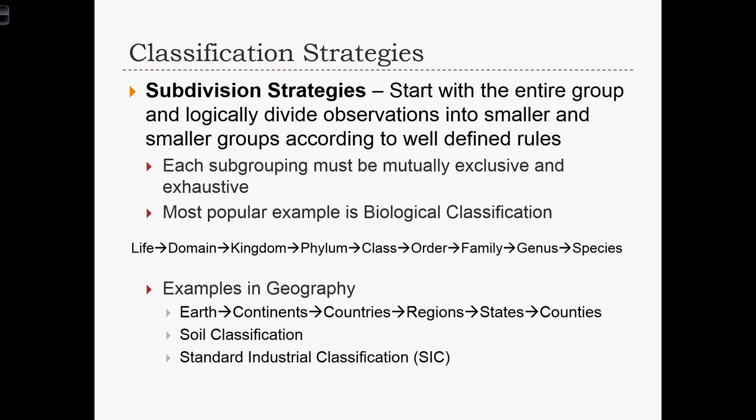These classification strategies are very popular. The most popular example is probably biological classification, where we try to classify all life forms into species. We start with all life, then we have domains, kingdoms, phylums, class, order, family, genus, species, and at the end all organisms or life forms on this planet have a species code.